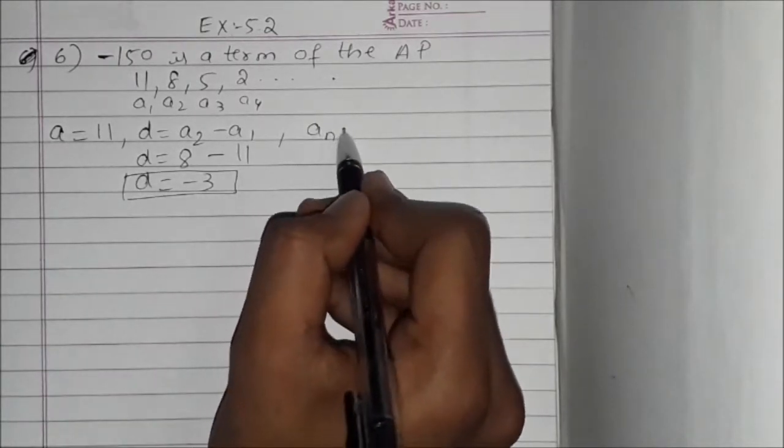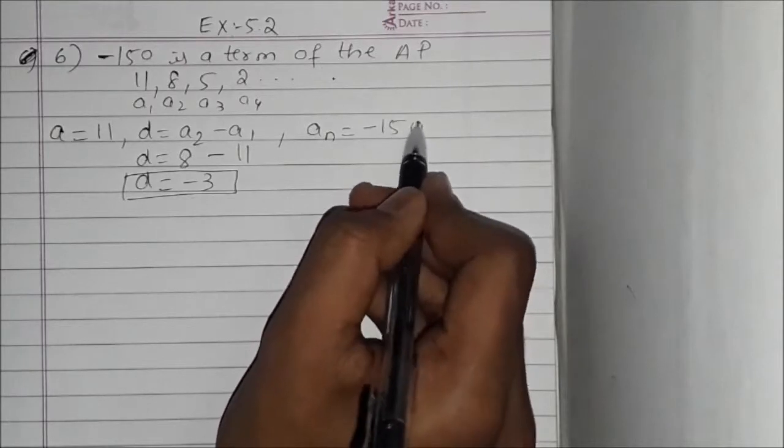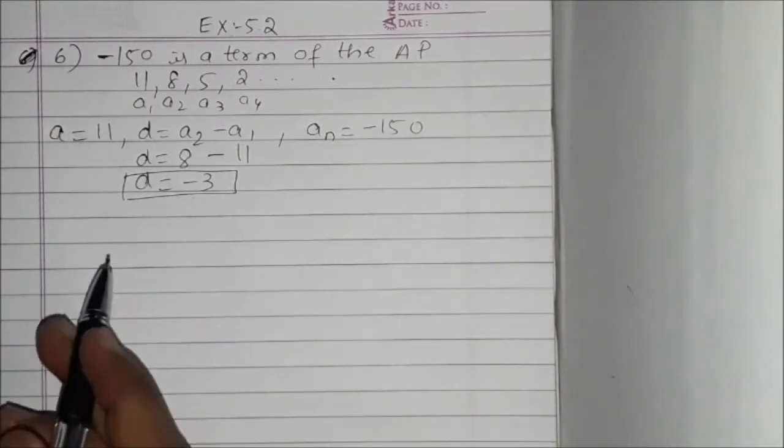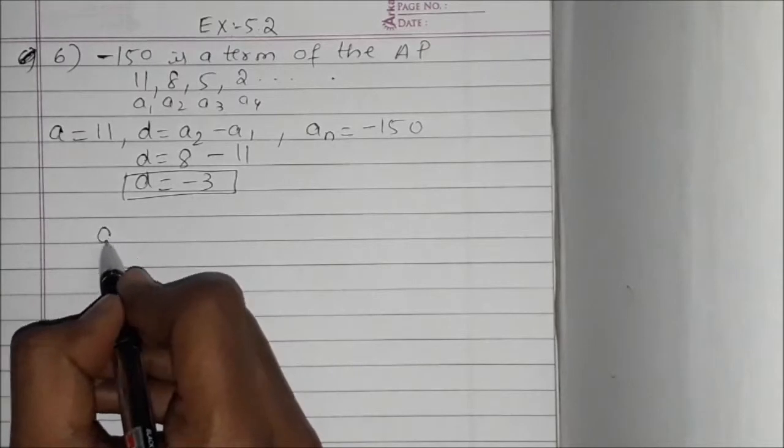And they are given AN is equal to minus 150. We have to check that, so we will take AN equal to minus 150.